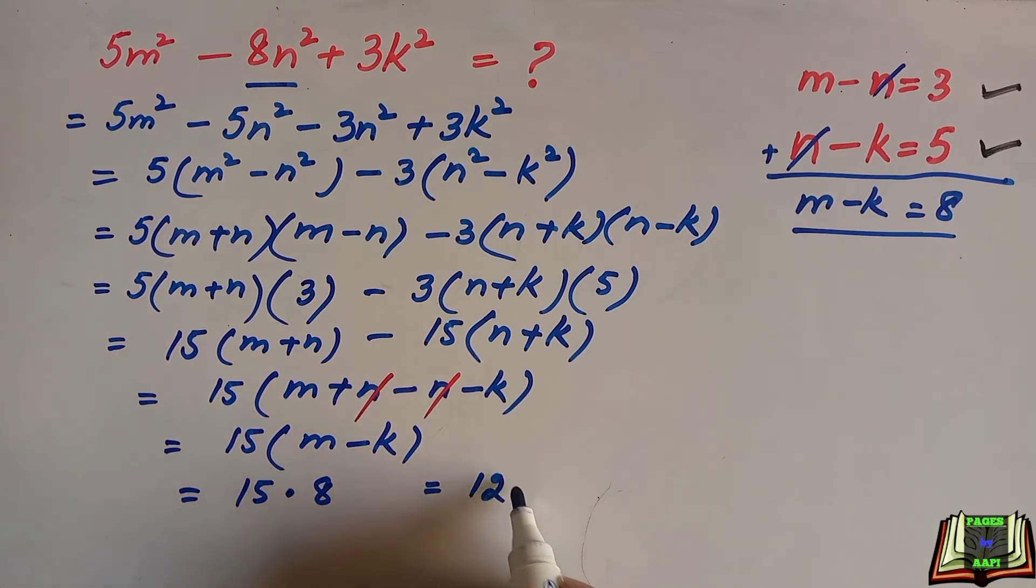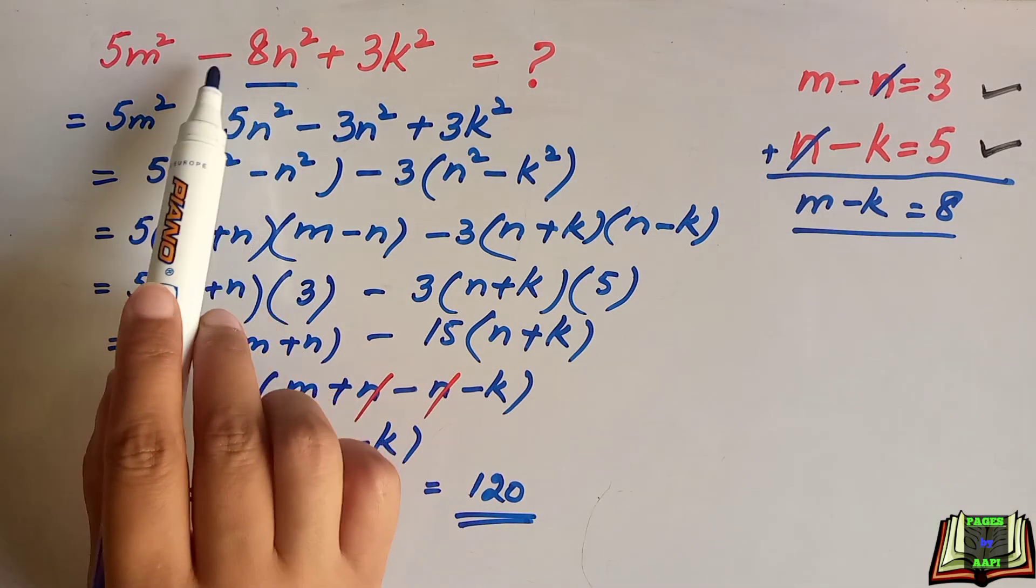15 times 8 is equal to 120. So this is the required answer. This entire equation is equal to 120.